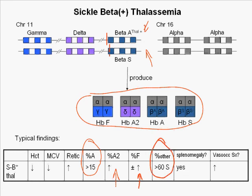These individuals have a mild chronic hemolytic anemia with low hematocrit, elevated reticulocyte count, splenomegaly, and minimal vaso-occlusive morbidity. The peripheral smear shows target cells with rare irreversibly sickled cells.